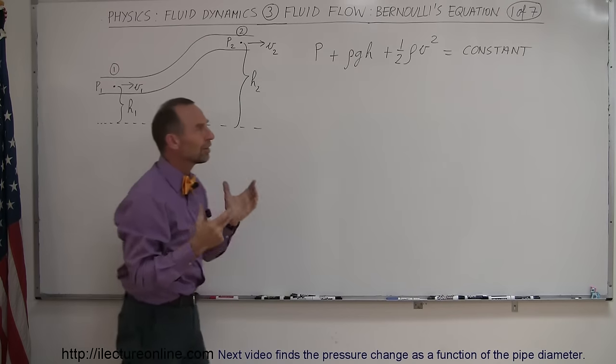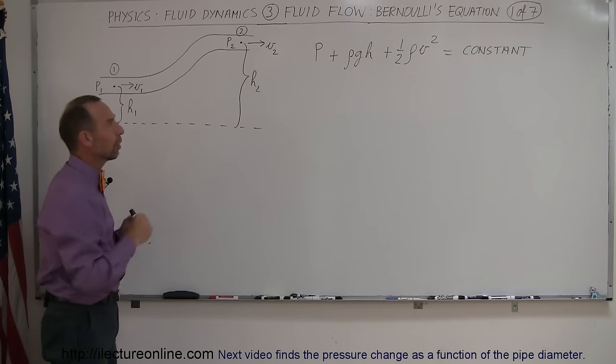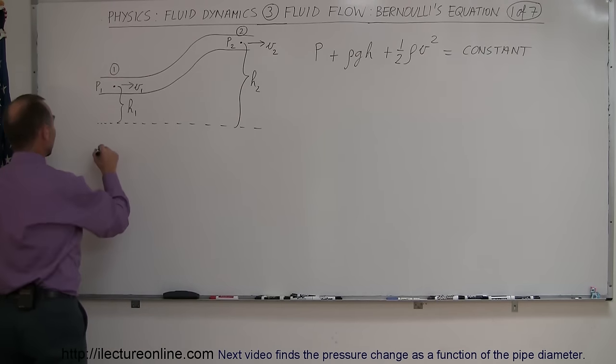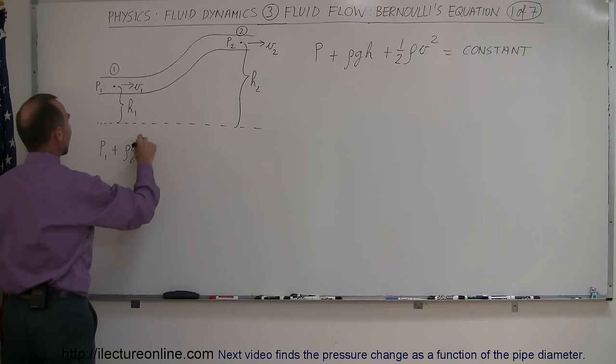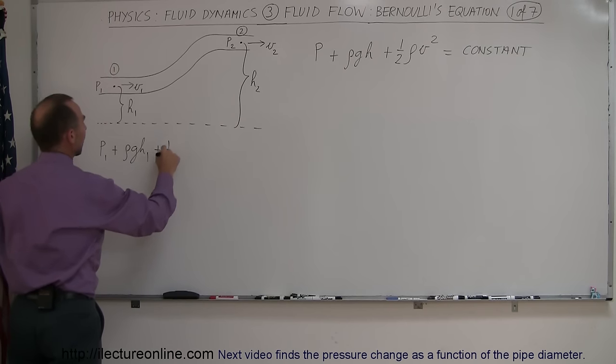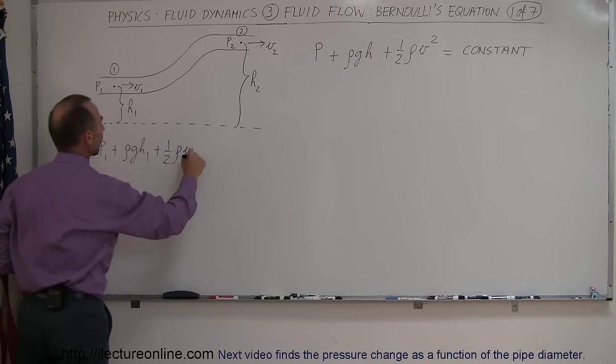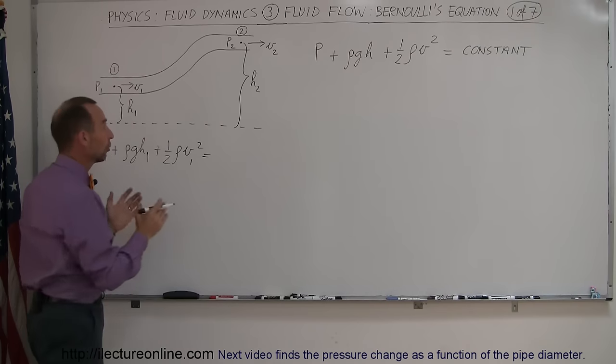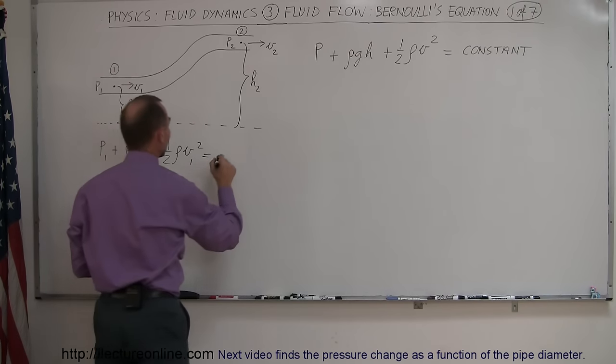And that's how Bernoulli was able to manipulate what happens in fluid flow. So, now, let's write down the equation. So, at point one, we can say pressure at point one plus rho gh at one plus one-half rho v at one squared must equal, since it's constant, to these three terms combined at point two. So, we can say pressure at two plus rho gh at two plus one-half rho v two squared.